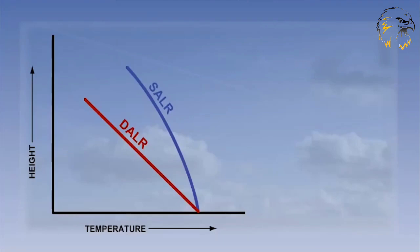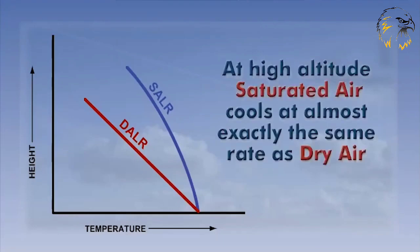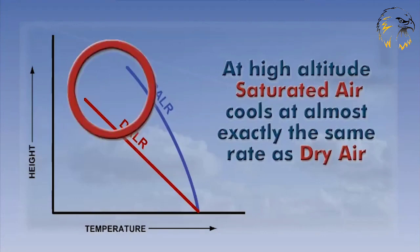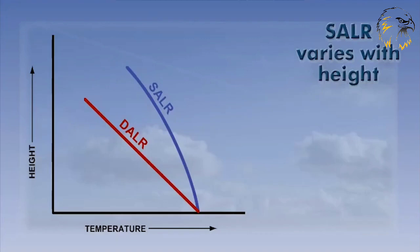The SALR is not constant through the troposphere. It reduces the higher up you go, and in fact, the saturated adiabatic lapse rate is almost exactly the same as the dry adiabatic lapse rate in the upper reaches of the troposphere. This is because the amount of water vapor that is required for saturation reduces at lower temperatures. It therefore follows that the amount of latent heat that is released also reduces as a parcel of air rises. The most commonly used average lapse rate of the SALR is 1.8 degrees Celsius per 1000 feet, or 0.6 degrees Celsius per 100 meters.